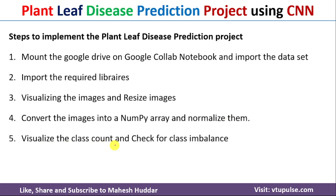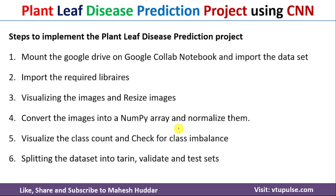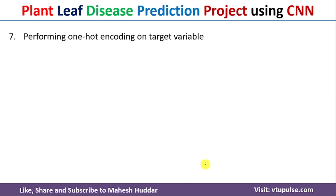Next we need to visualize the class count and check for class imbalance. If there is a class imbalance, we need to address that issue; otherwise the model may overfit. The sixth step is to split the dataset into train, validate, and test sets. Next we need to perform one-hot encoding on the target variable.